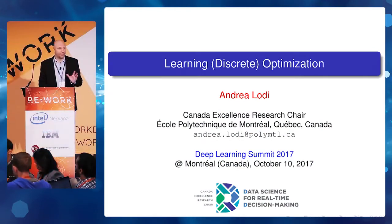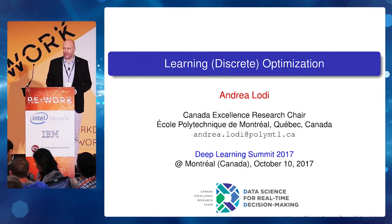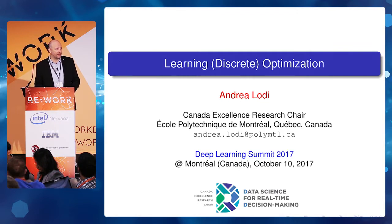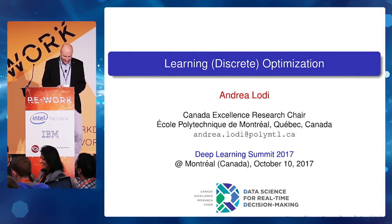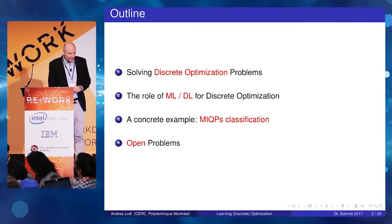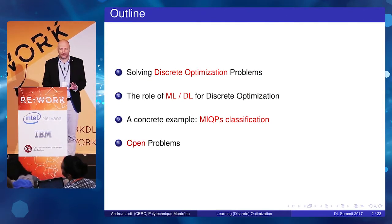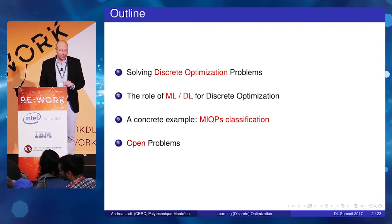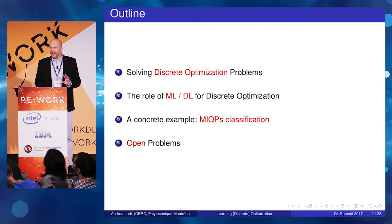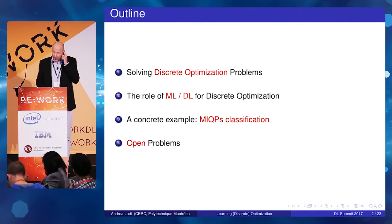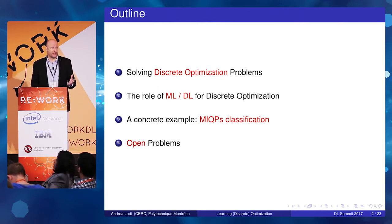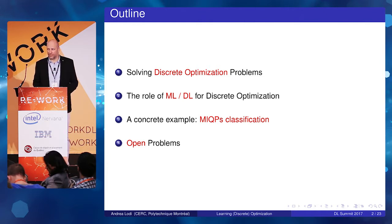Thank you to the organizers for the invitation. I'm not a machine learning person — at least not a deep learning person by education — so you will see zero videos, and I apologize for that in advance. This is the outline of my presentation: I will talk about discrete optimization, give a few examples, introduce the notation, and then discuss the role of machine learning and deep learning for discrete optimization, which is a new area with a lot to do.